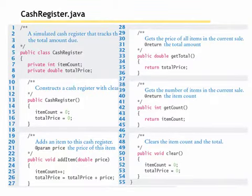Here's an example of the CashRegister class, showing the default constructor at line 13, and then the instance methods: addItem at line 23, getTotal at line 33, getCount at line 42, and finally clear at line 50. The instance fields, itemCount and totalPrice, are at lines 7 and 8.